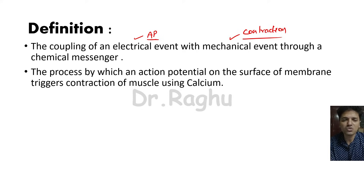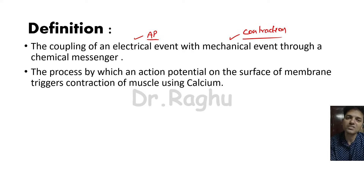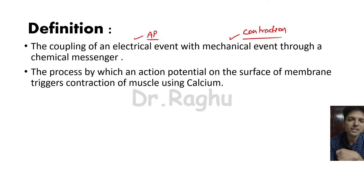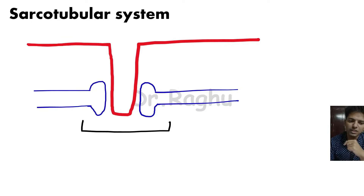Many times I have seen students writing neuromuscular transmission or skeletal muscle contraction as the answer for this question. Just remember it is neither that nor this — it is a process occurring in between, that's why it is called a coupling. In order to understand excitation-contraction coupling we have to understand a simple system present in the skeletal muscle called the sarcotubular system.